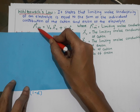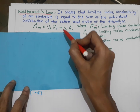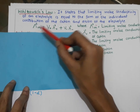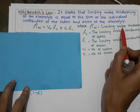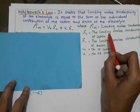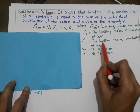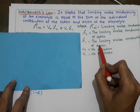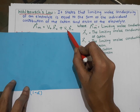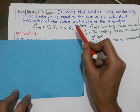Lambda naught m is equal to V plus times lambda naught plus, plus V minus times lambda naught minus. Here lambda naught m is the limiting molar conductivity of the electrolyte. Lambda naught plus is the limiting molar conductivity of the cation, lambda naught minus is the limiting molar conductivity of the anion, V plus is the number of cations, and V minus is the number of anions.